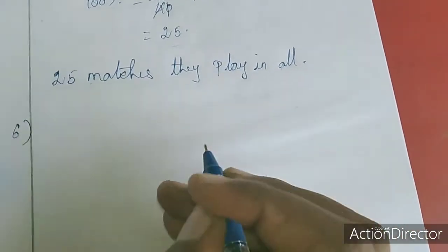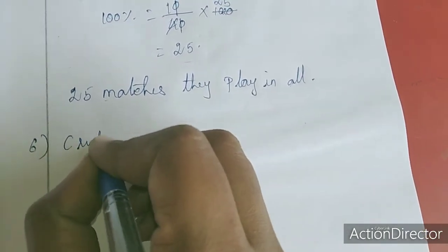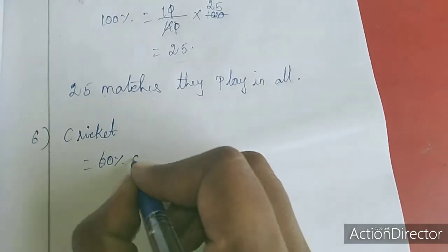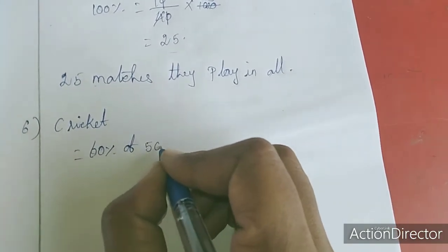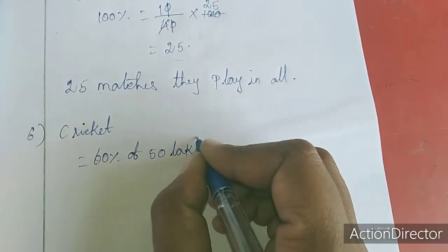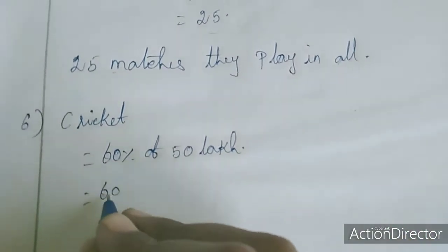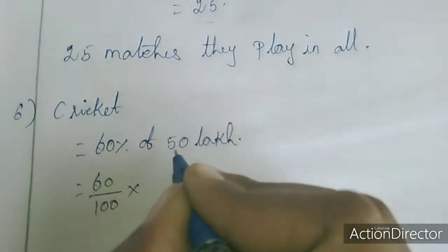First I am going to find out for cricket. For cricket: 60% of 50 lakh. 60% is 60 by 100 into 50 lakh.